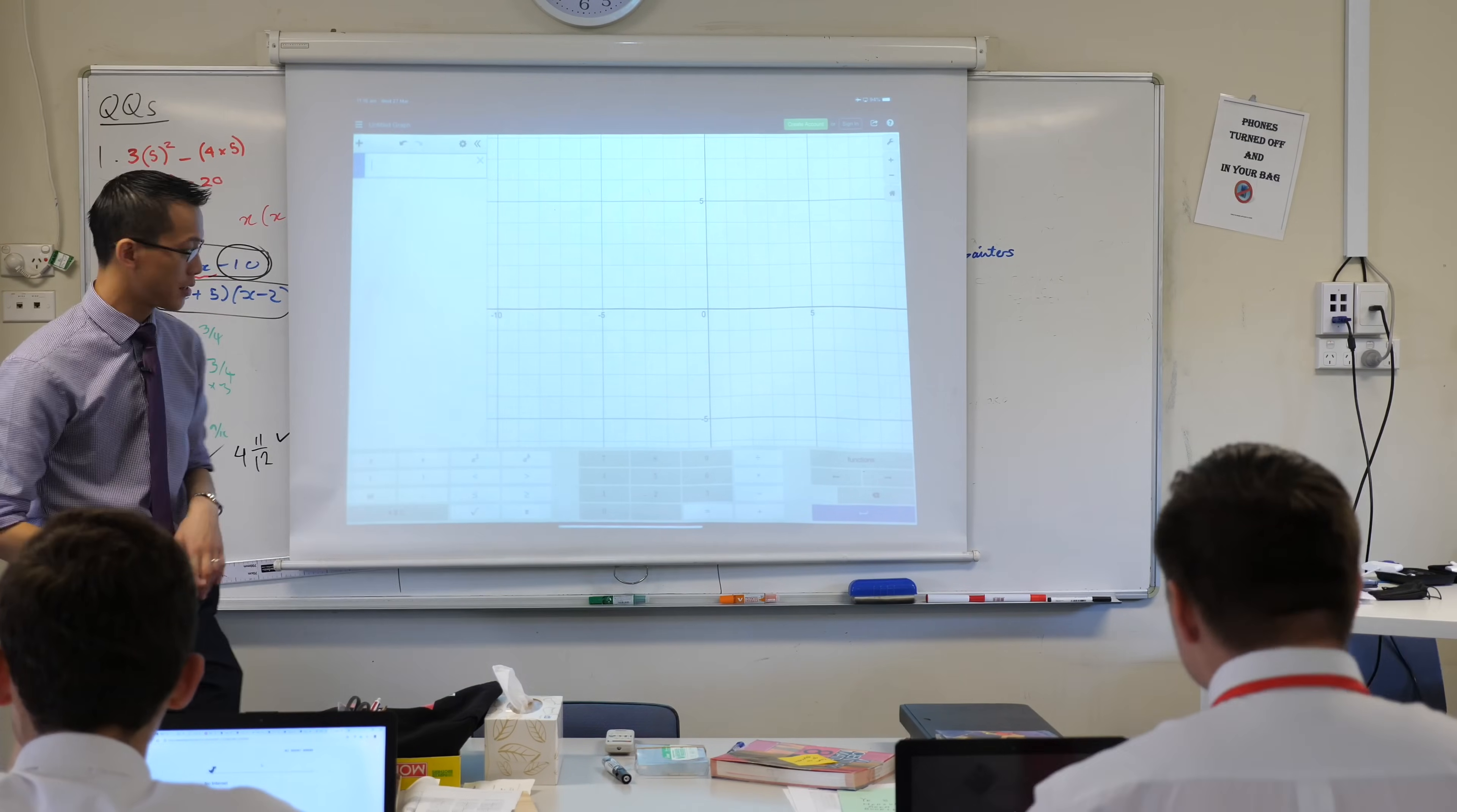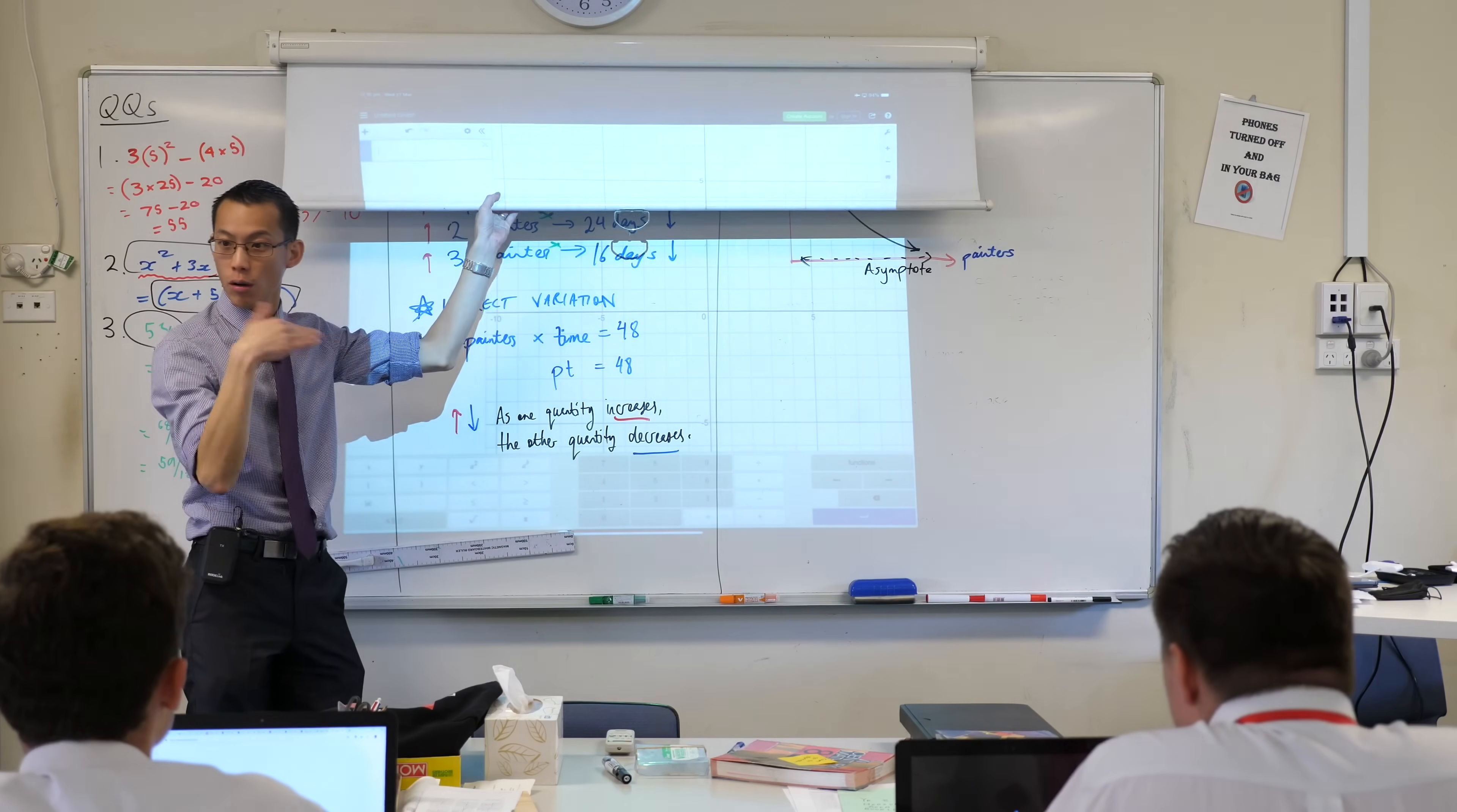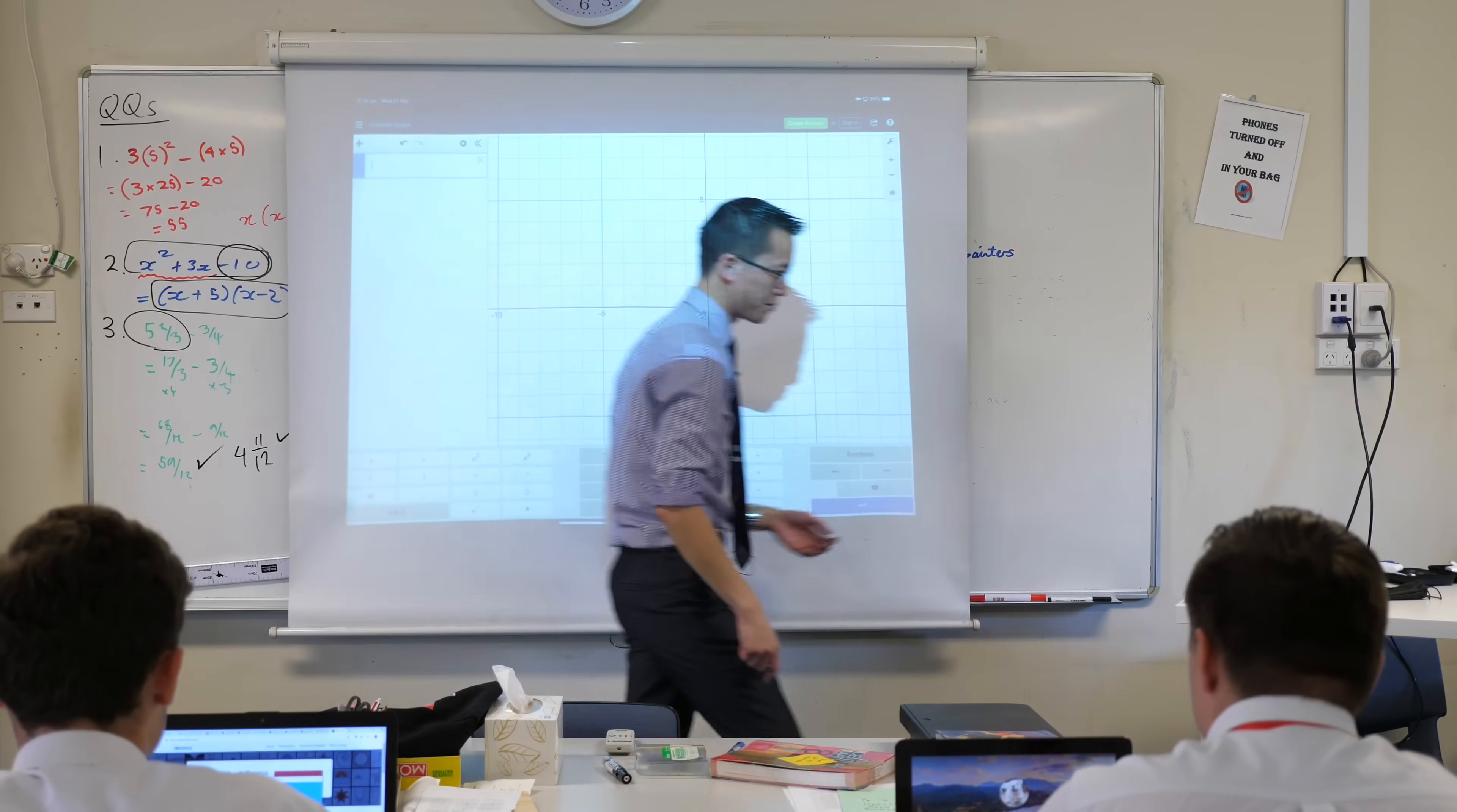What I first want us to investigate is that original graph that we were just looking at. So we said, I'm just going to zoom back up, we said painters times time equals 48 and I put painters on the horizontal axis, that's kind of like our x, and I put time on the vertical axis that's kind of like our y. So what I'd love you to write in your equation is x times y equals